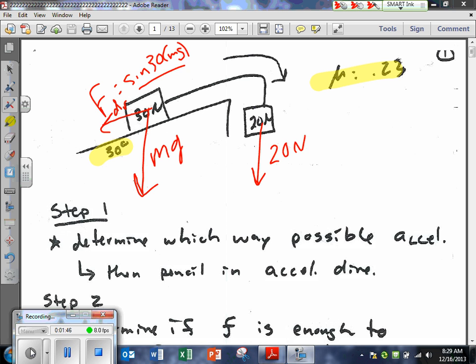So the sine of 30 times 30 newtons is going to be 15, right? So we know now that there's 15 newtons of a pull in this direction, down the ramp. And we have a 20 newton pull in that direction. So who wins the tug of war? The 20 newton, right? So if there's acceleration, it's got to be to the right. Do you agree with that?